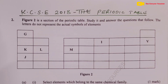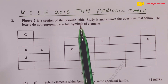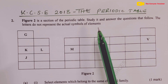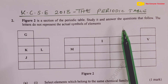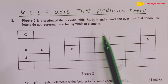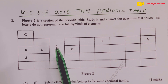Chemistry Paper 2 for the year 2018, Question number 2, testing on the periodic table. Figure 2 is a section of the periodic table. The candidates were advised to study it and answer the questions that follow. The letters did not represent the actual symbols of the elements.